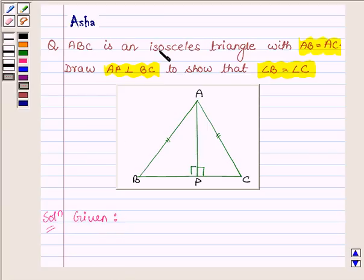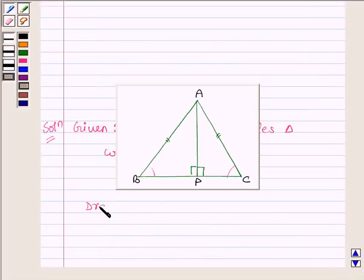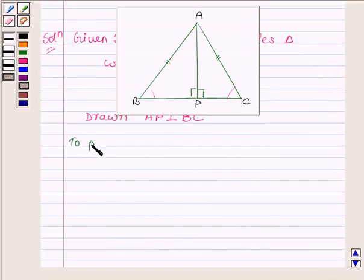First, we are given that ABC is an isosceles triangle with side AB equal to AC, and we have drawn perpendicular AP on BC. We will show that angle B is equal to angle C. So, given triangle ABC is an isosceles triangle with AB equal to AC and we have drawn AP perpendicular on BC, we have to prove that angle B is equal to angle C.